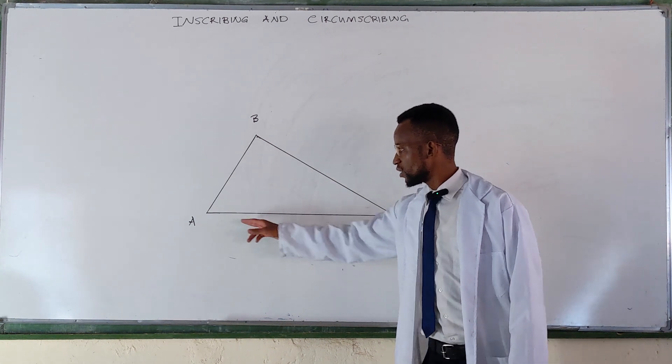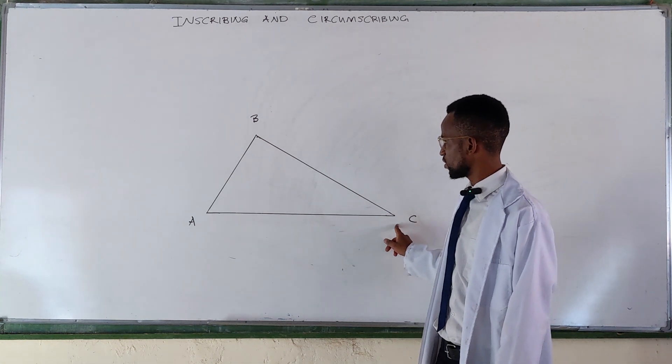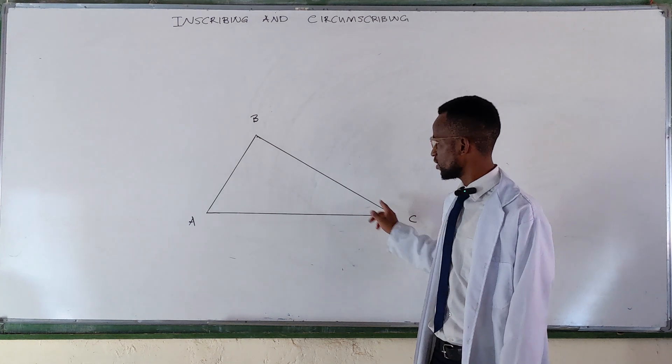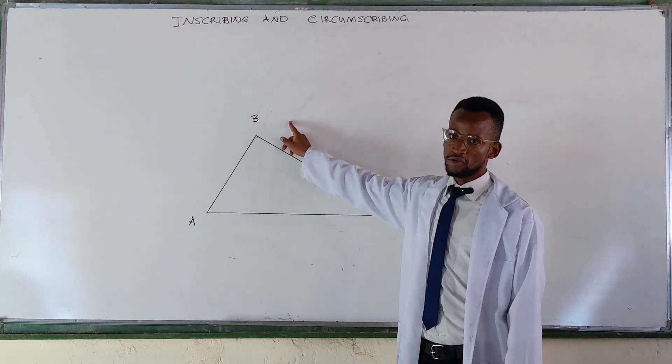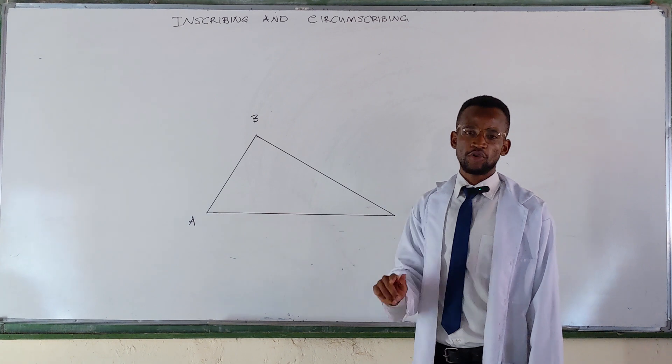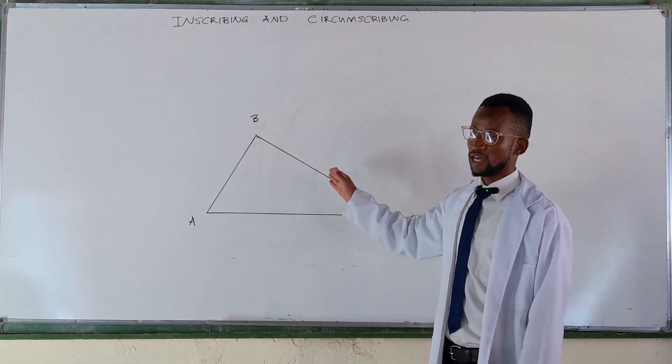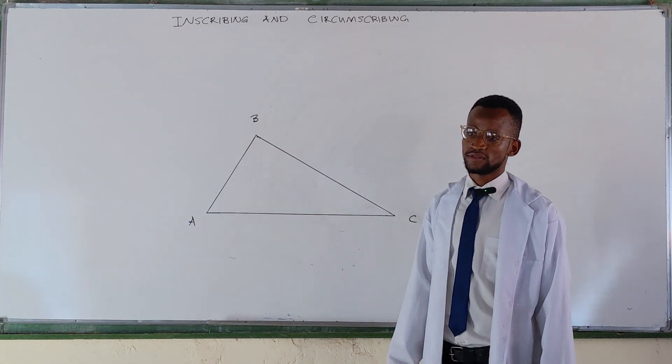So A, C, or C, B, or BA. We bisect any of these sides. Just two.